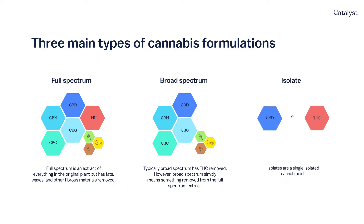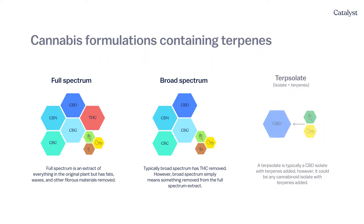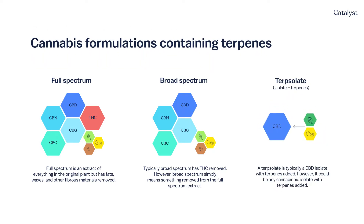Isolate products contain a single isolated compound such as CBD or THC. Isolates do not contain terpenes or other cannabinoids and are generally considered to lack the efficacy of broad or full spectrum products. One more formulation are terpsilates — isolates with terpenes added back in, usually from other botanicals rather than the original cannabis plant. In conclusion, full spectrum, broad spectrum, and terpsilates are the formulations that contain terpenes.